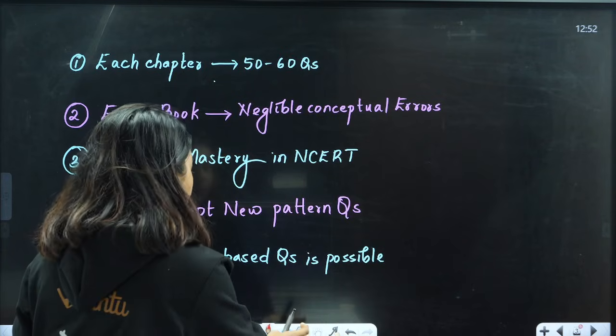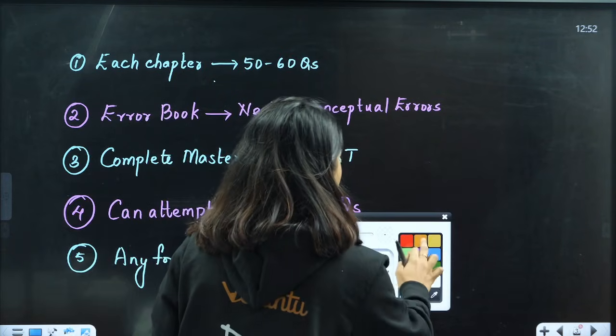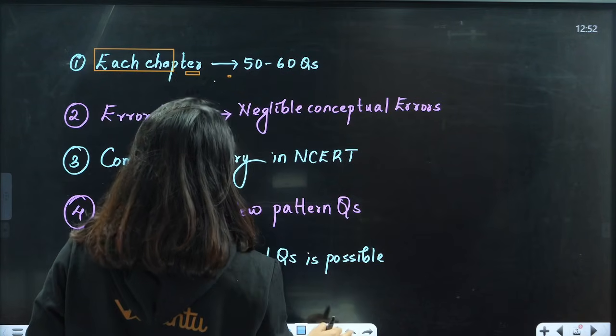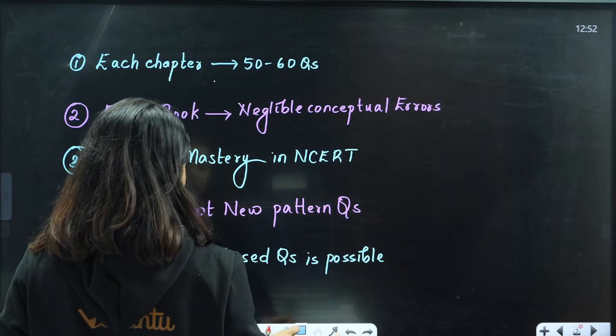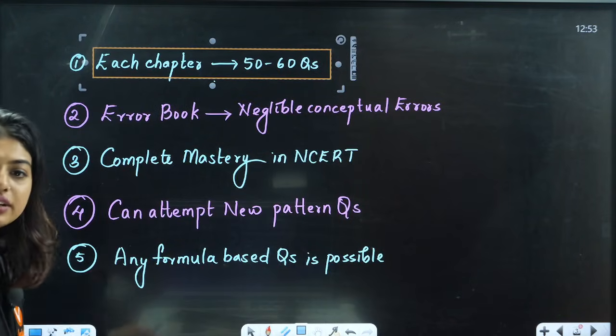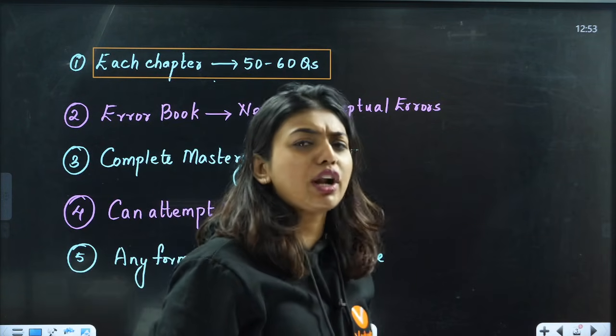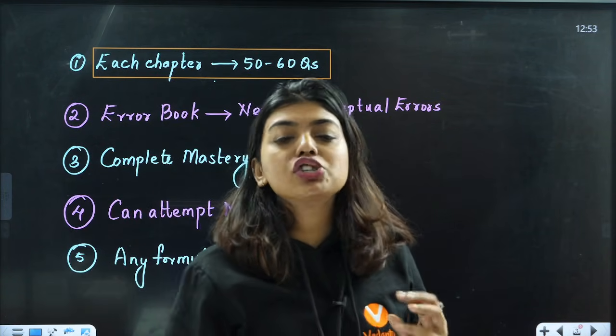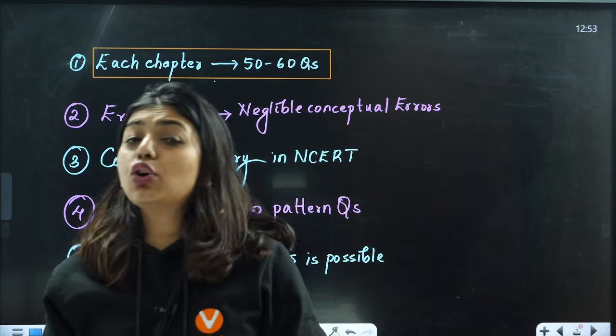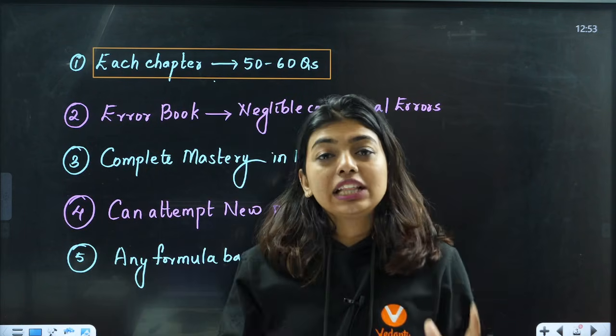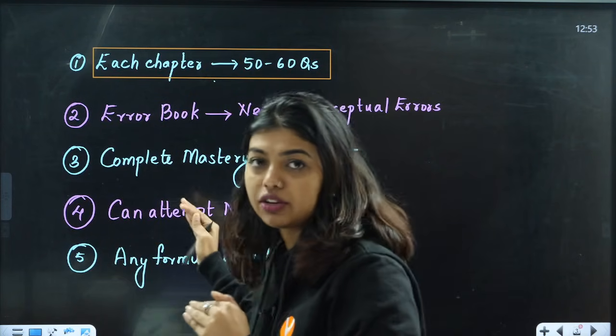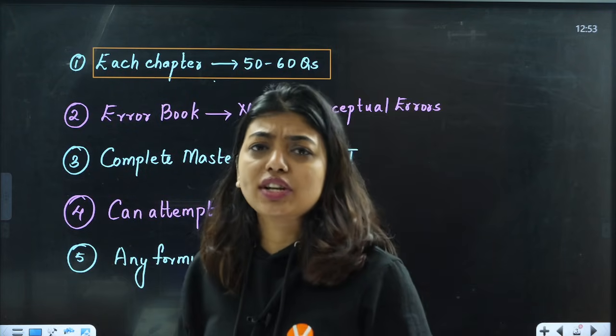Now understood? This is the criteria. If you are telling me that till the end of this year you are only going to solve 50-60 questions each chapter, then this is the criteria that you should get a tick on. And I know majority of you would have told no for this, because it's almost near impossible that we do not have any errors or we know complete mastery of NCERT.